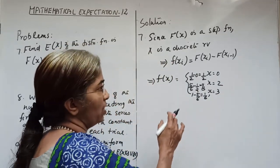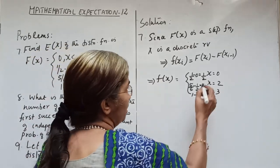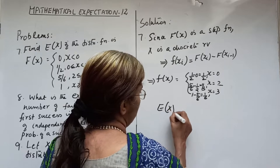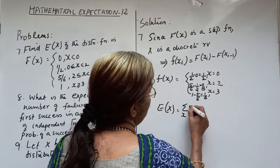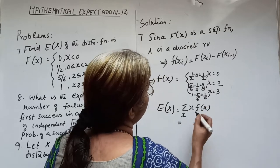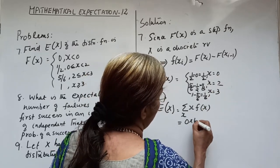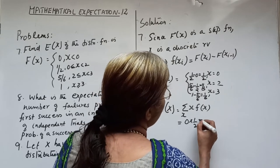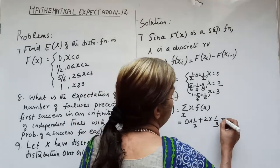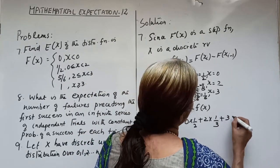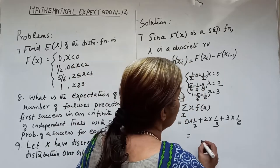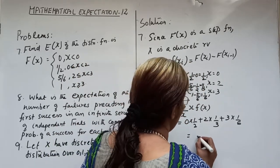We have the values of X and their corresponding probabilities. Hence, expectation of X = Σ X · f(X) = 0·(1/2) + 2·(1/3) + 3·(1/6) = 0 + 2/3 + 3/6 = 4/6 + 3/6 = 7/6.